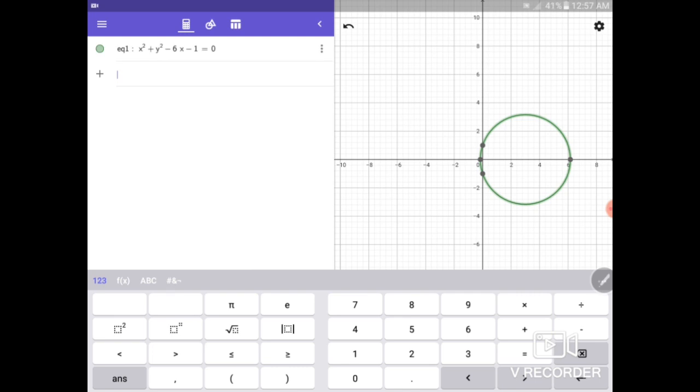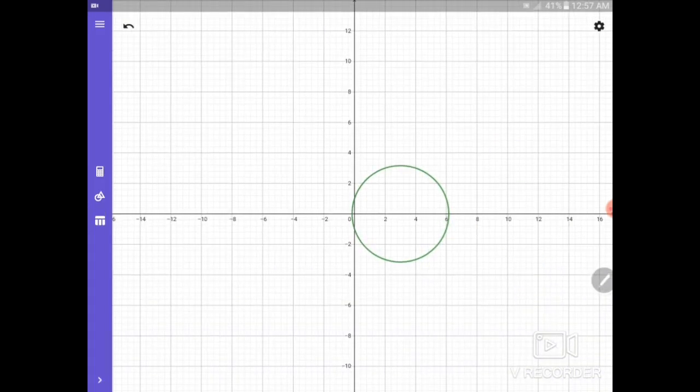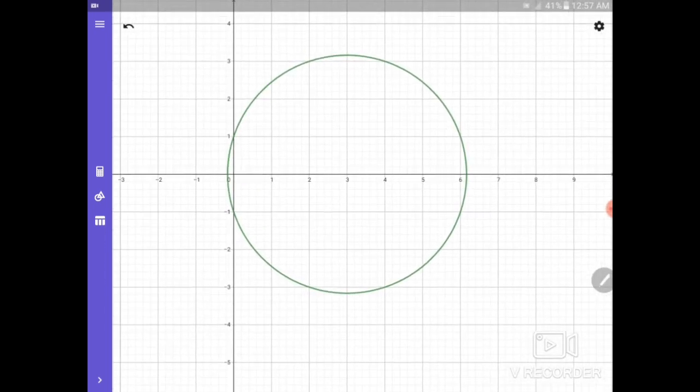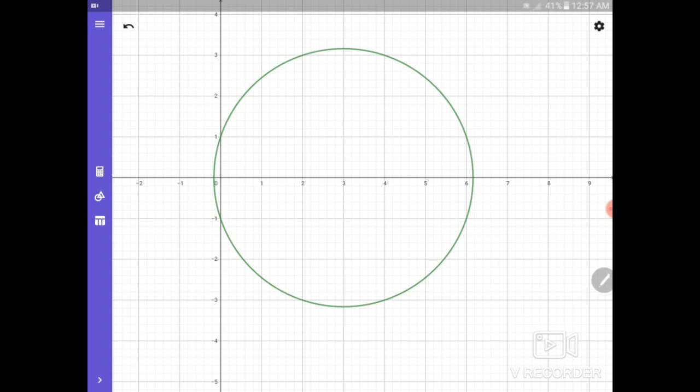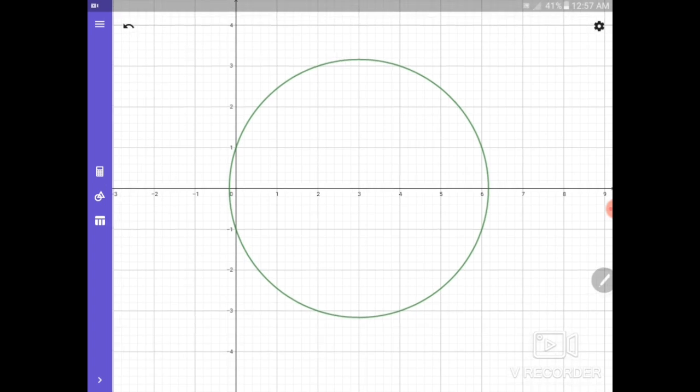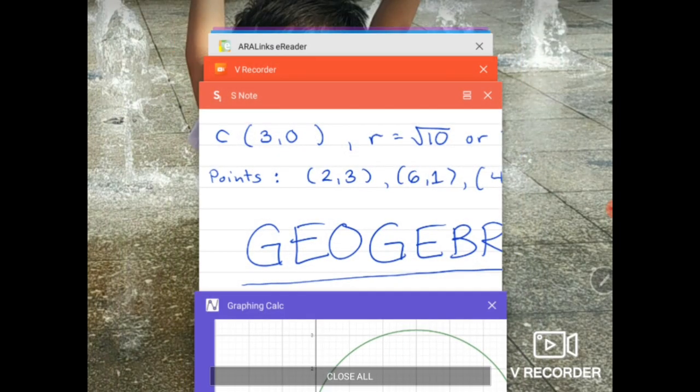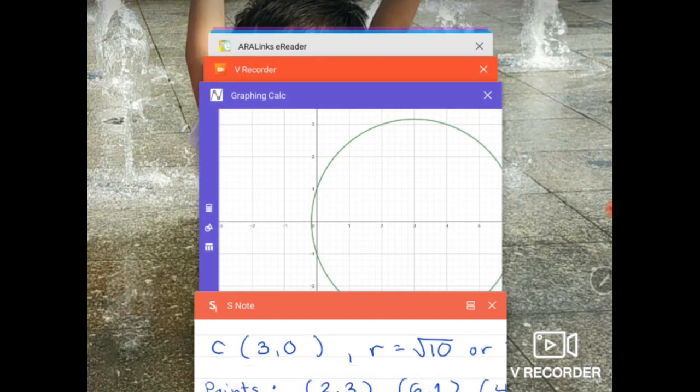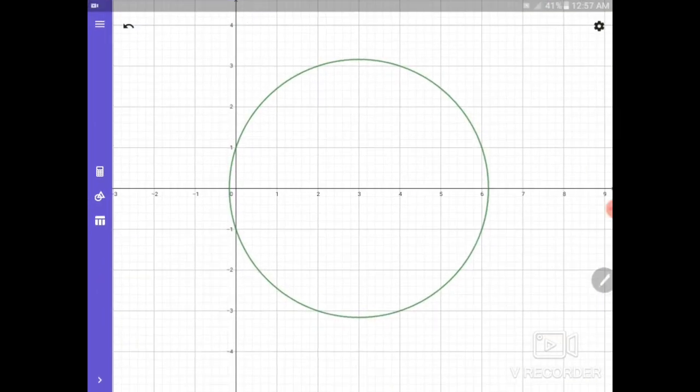As you can see, automatic it graphed. Let us zoom in so we can see better. What are the conditions? Let us see if it satisfies the conditions. So going back, center is at 3 and 0. Then radius is 3.16. Center is at 3 and 0. As you can see, exact. The center is at 3 and 0.